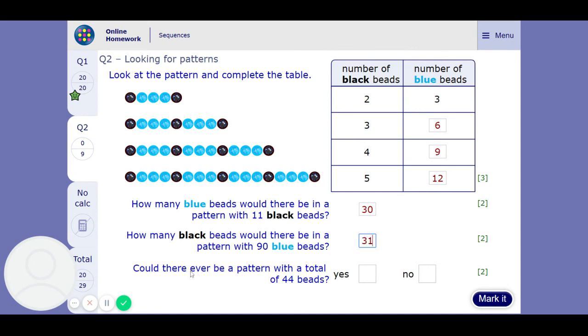Will there be a pattern with a total of 44 beads? So let's look at the totals. We've got 5, 9, 13, 17. So if we think about what they're going up in, 5 to 9 is going to be going up in 4. Going up in 4, going up in 4's each time.